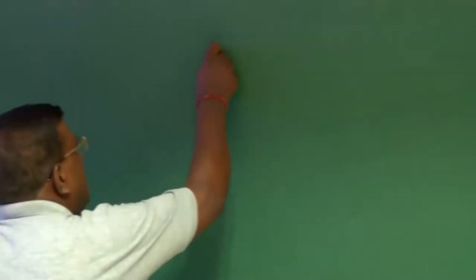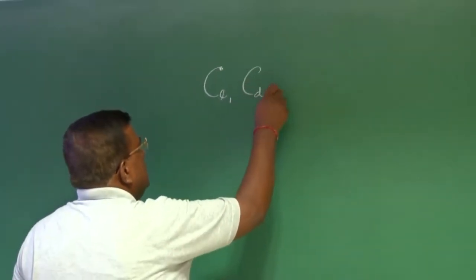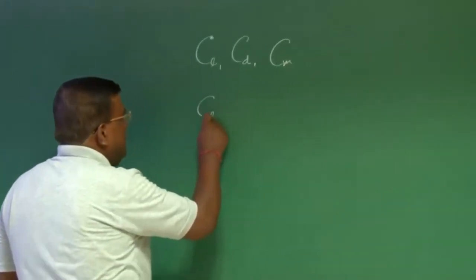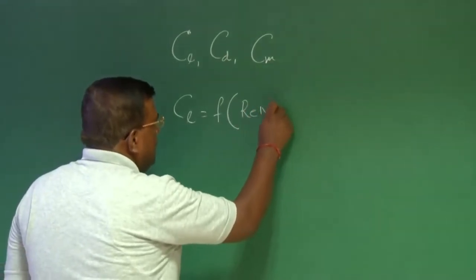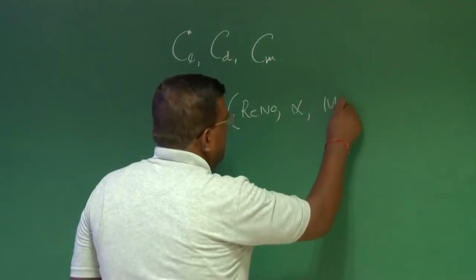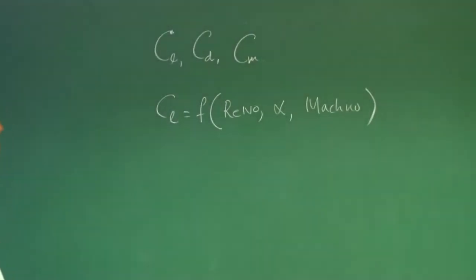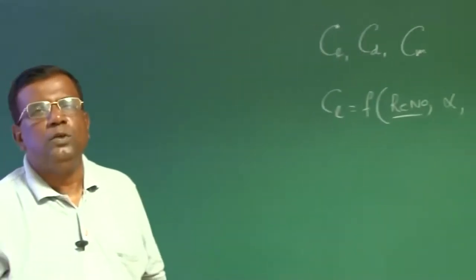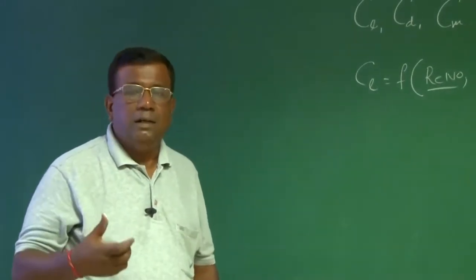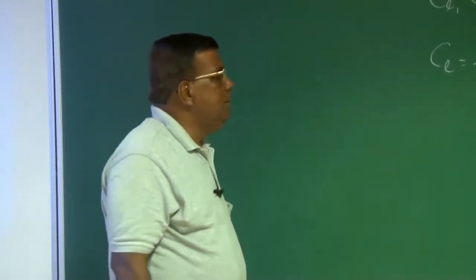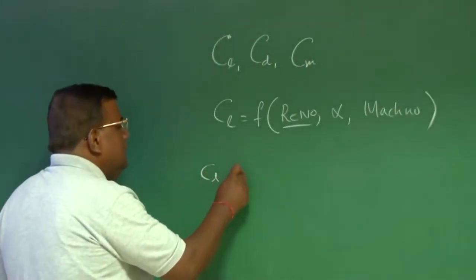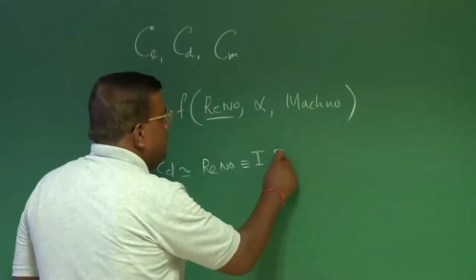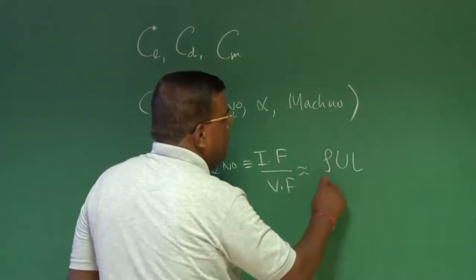First, let us not forget, we are talking about Cl, Cd and then some part Cm. These are all aerofoil characteristics. And you know from our first course, the Cl will be a function of Reynolds number, alpha, and Mach number. I will focus more on Reynolds number as a designer. If I have to design an airplane, I need to know what is the design altitude and what is the design cruise speed. Why is that important? Because I know the Cl and Cd vary with Reynolds number.